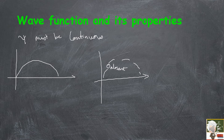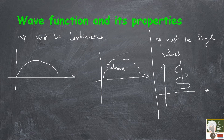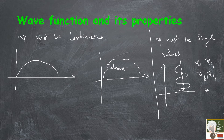Psi must be single-valued. For example, if a wave function at one point gives multiple values — say four points giving psi1, psi2, psi3, and psi4 — that is having multiple values. Your psi must always be a single-valued function.